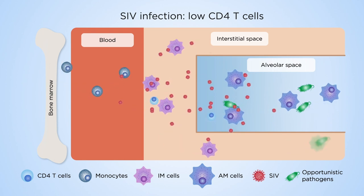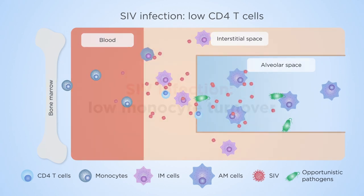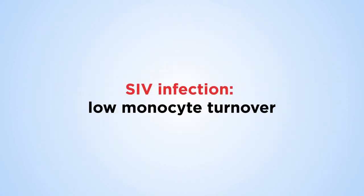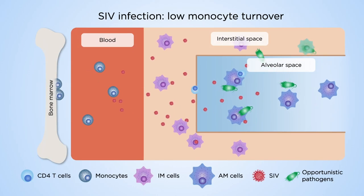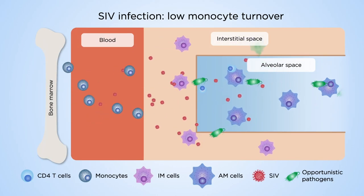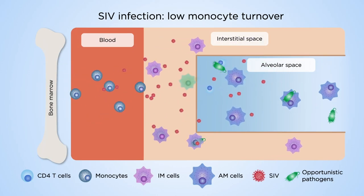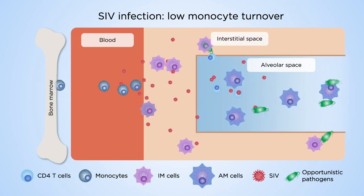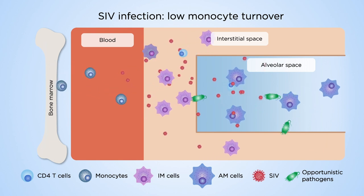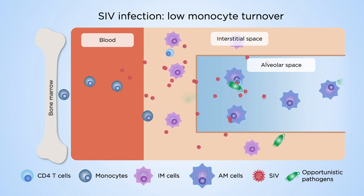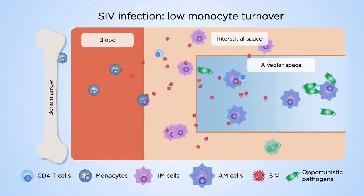Then, interstitial macrophages become infected and are also killed. Bone marrow increases production of monocytes to replace the killed interstitial macrophages to prevent opportunistic infection, despite low CD4 cells.